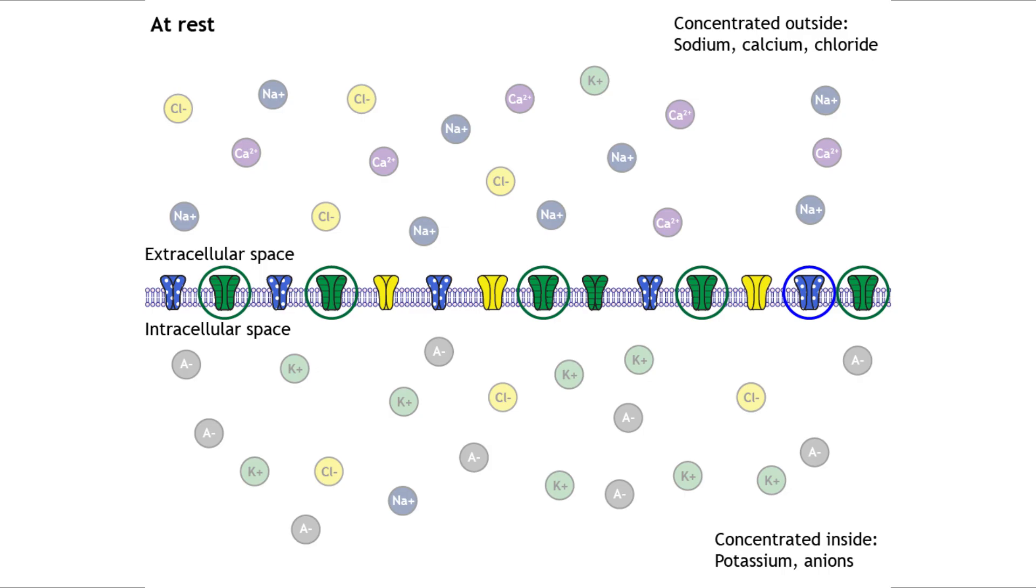Because potassium channels vastly outnumber the others, the resting membrane is considered most permeable to potassium, or K+, with lesser but non-trivial contributions from sodium and chloride. The equilibrium potential is the electrical potential at which there is no net movement of a specific ion, like chloride, across the membrane, because the electrical and the chemical concentration forces are balanced out.